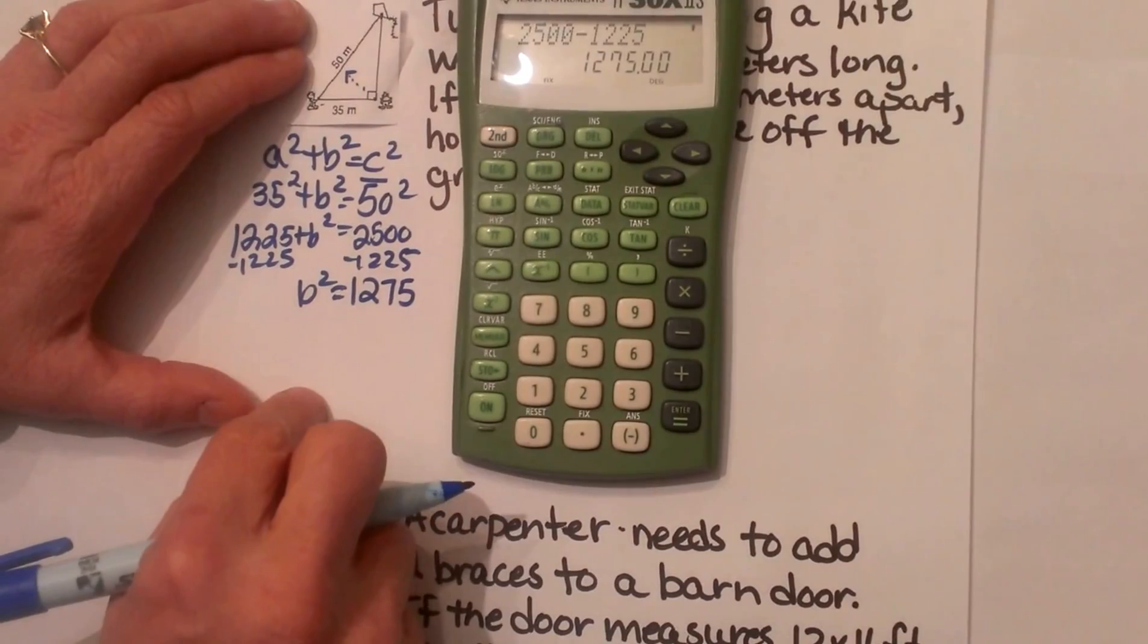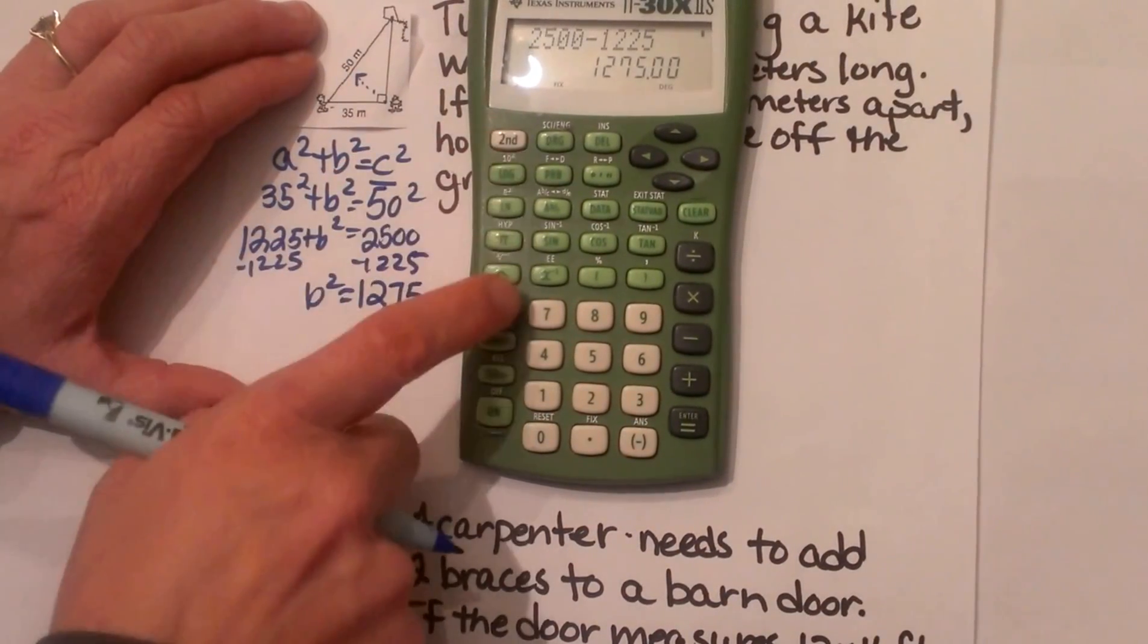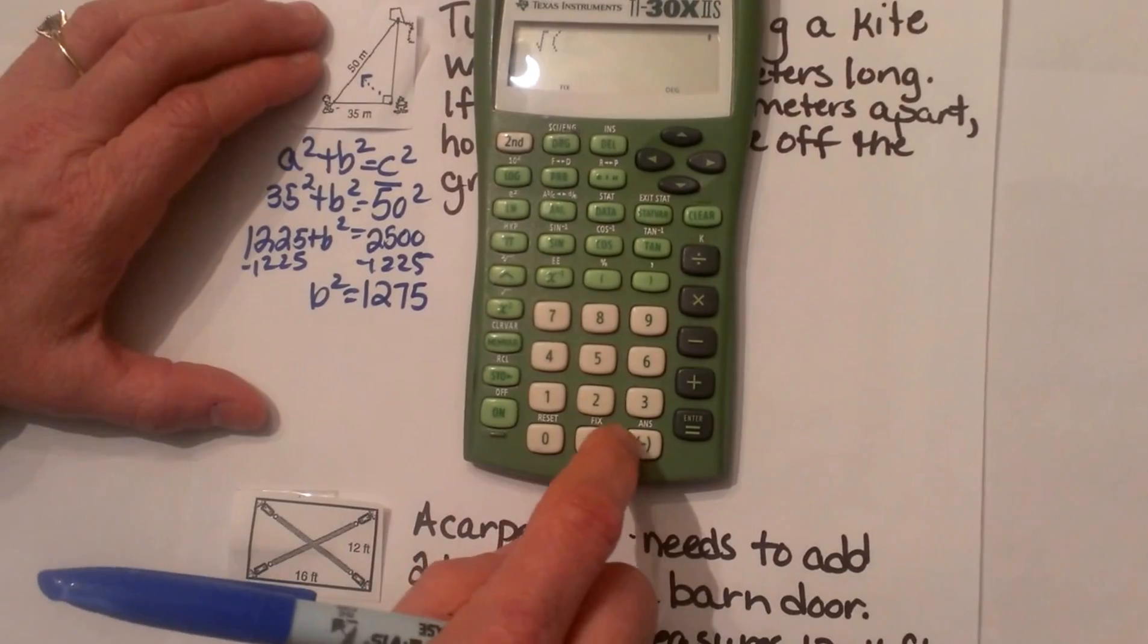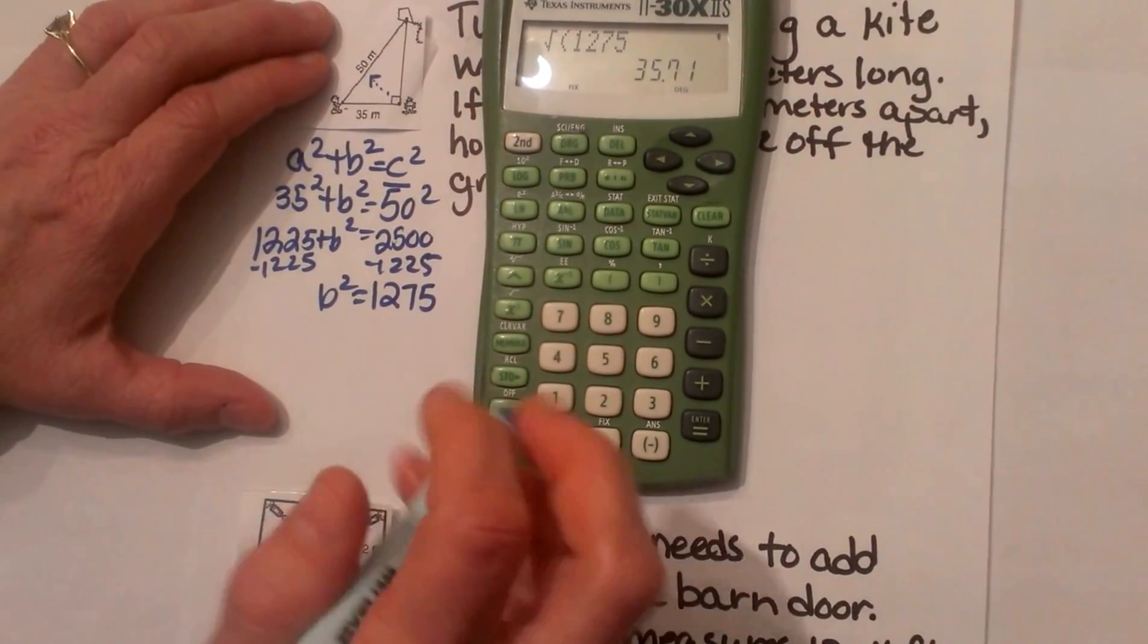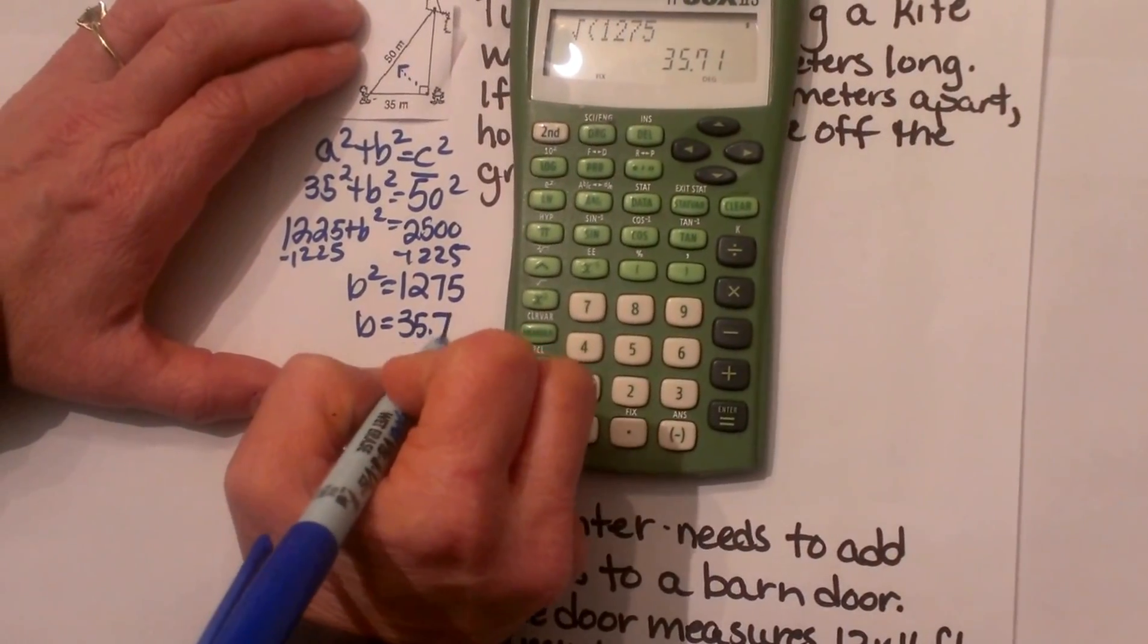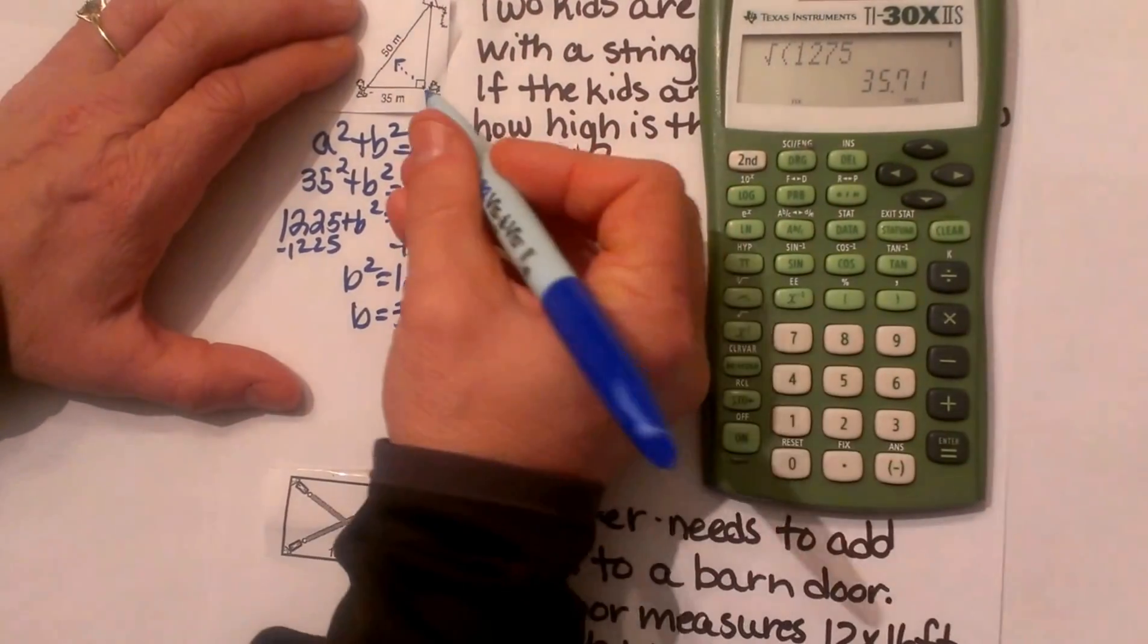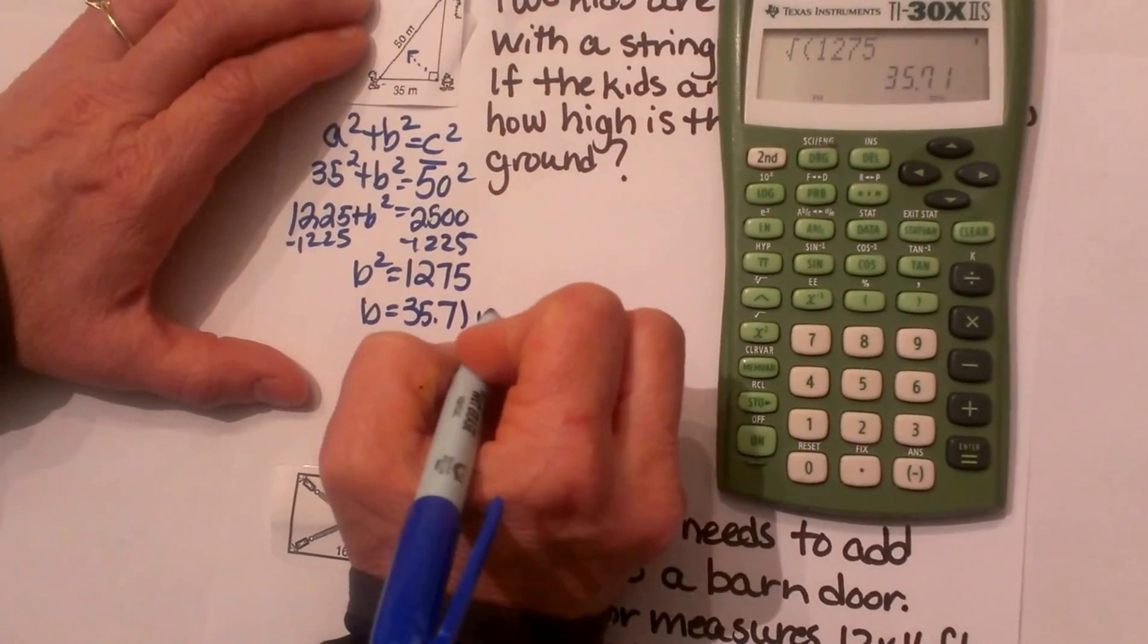Now to undo the square I am going to take the square root so I am going to hit the second and square root button of 1275 and my answer is 35.7, so that means the kite is 35.7 in this case meters high.